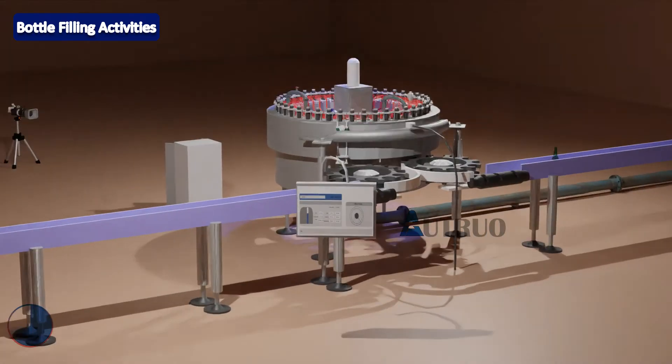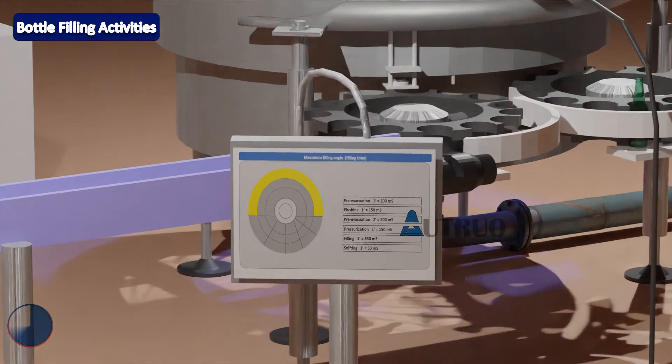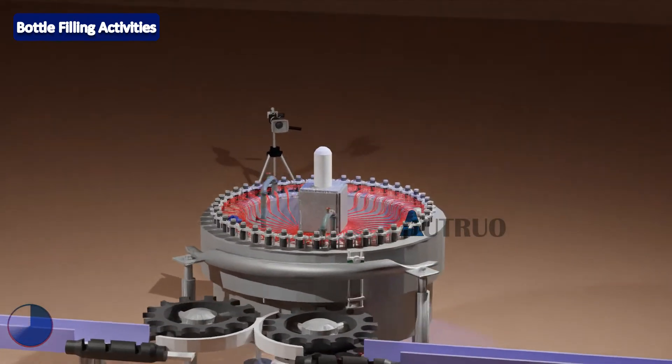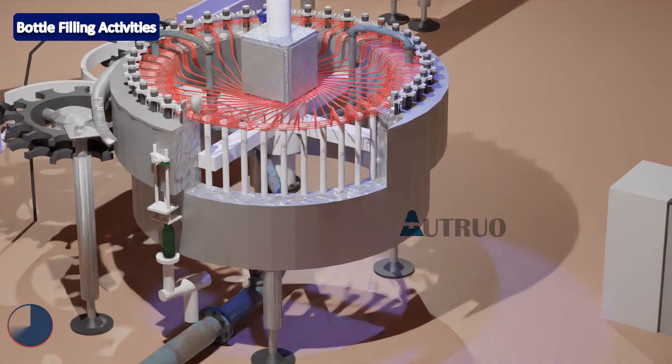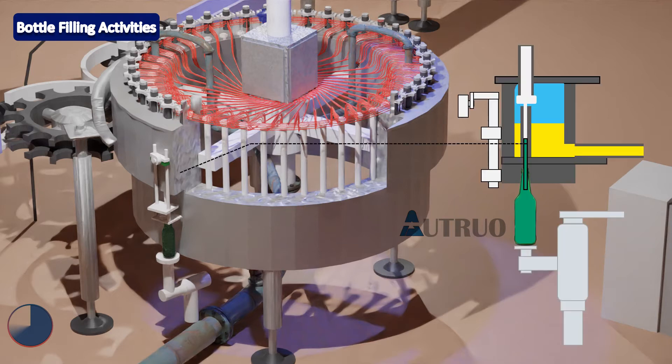Now let's look at the HMI again. When the filler rotates between 0 to 5 degrees, the PLC will use compressed air to activate the pre-evacuation valve, and pre-evacuation will take place within the bottle. This is used to remove oxygen and other types of air from the bottle.